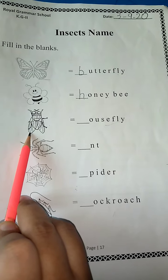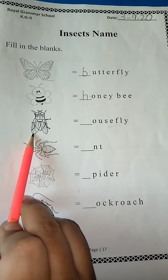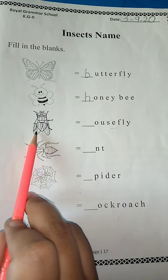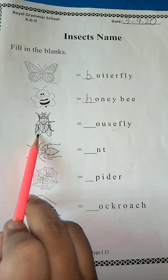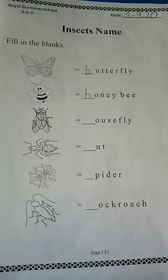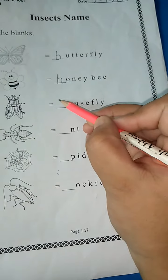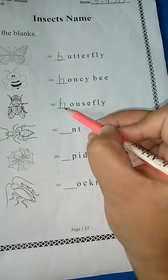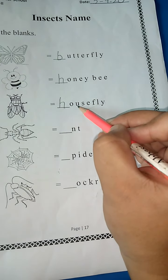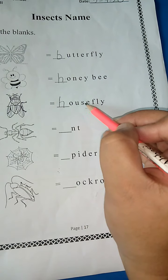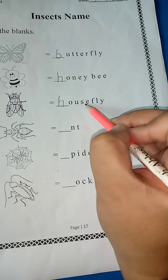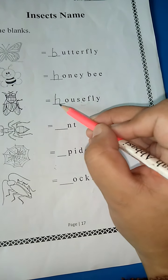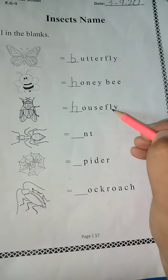So class KG2, what is this? This is housefly. Housefly. Again — the H sound is there, so I am going to write H here. H-O-U-S-E, house. F-L-Y, fly. Housefly.